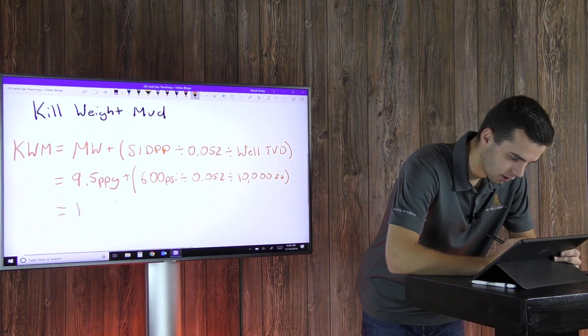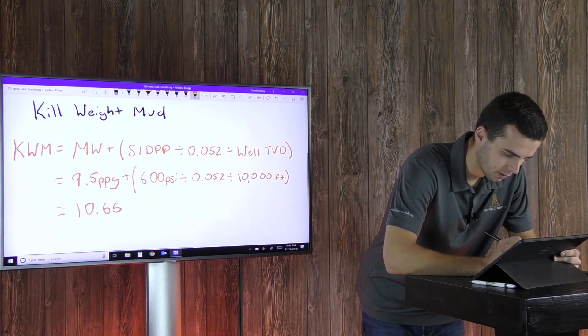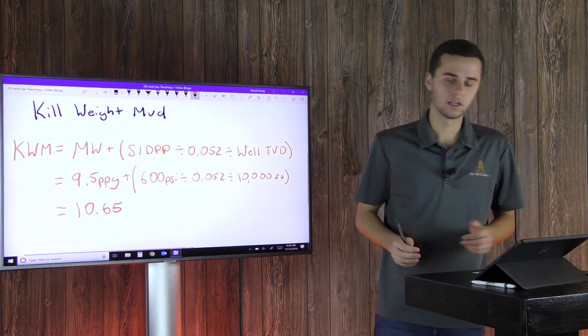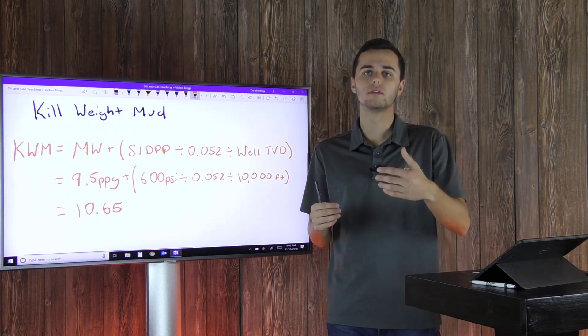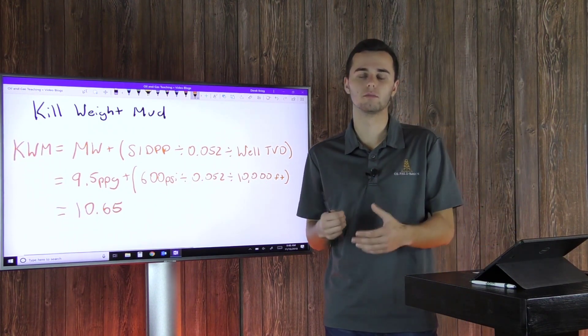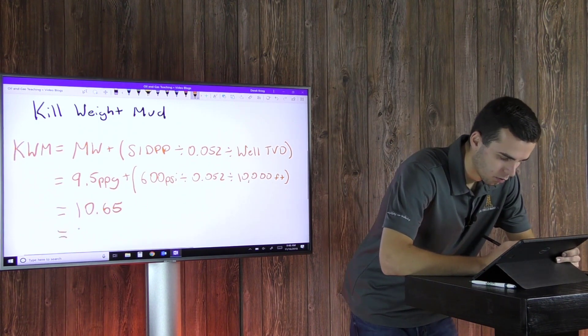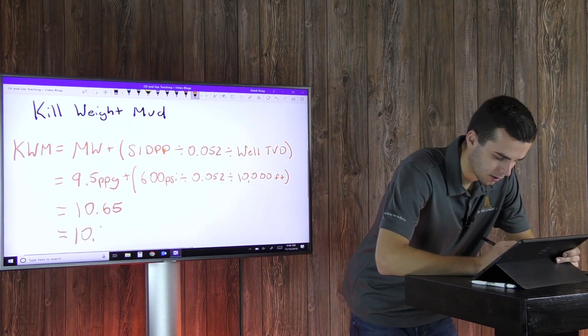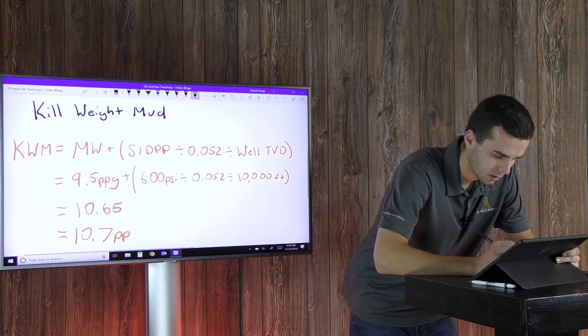And that'll equal 10.65. But here, we always round up to the nearest tenth decimal place. So in this case, what you'll want to use as your kill weight mud will be 10.7 ppg.